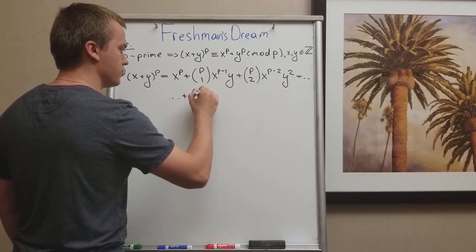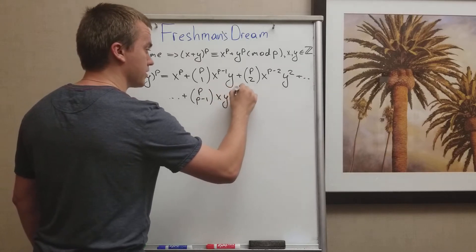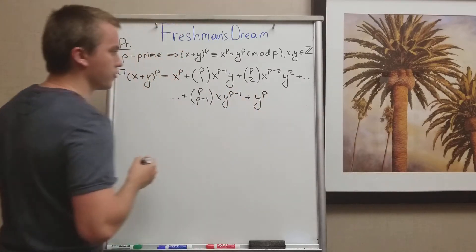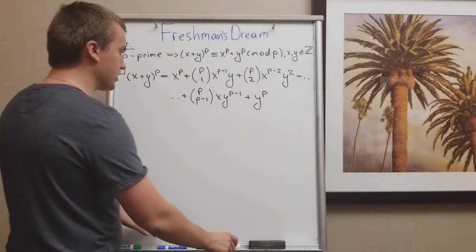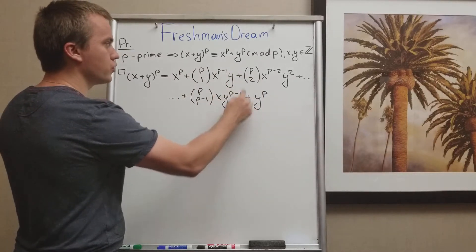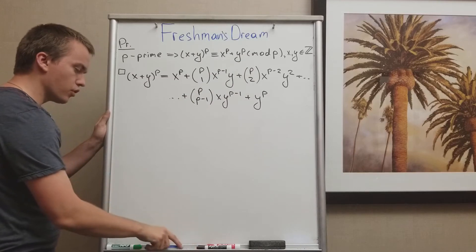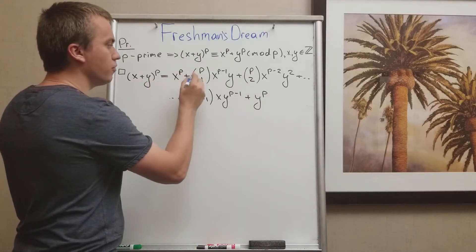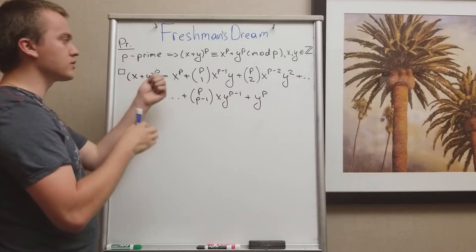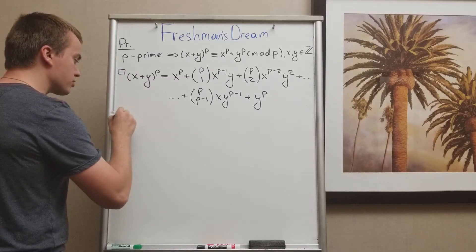plus p choose p minus 1, x times y to the power of p minus 1, and the last term is y to the power of p. And you can see what I want to show, I want to show that this whole thing is going to be congruent to x to the p plus y to the p. Or in other words, I want to show that each of these terms is going to be divisible by p. So everything between x to the power of p and y to the power of p is going to be divisible by p.